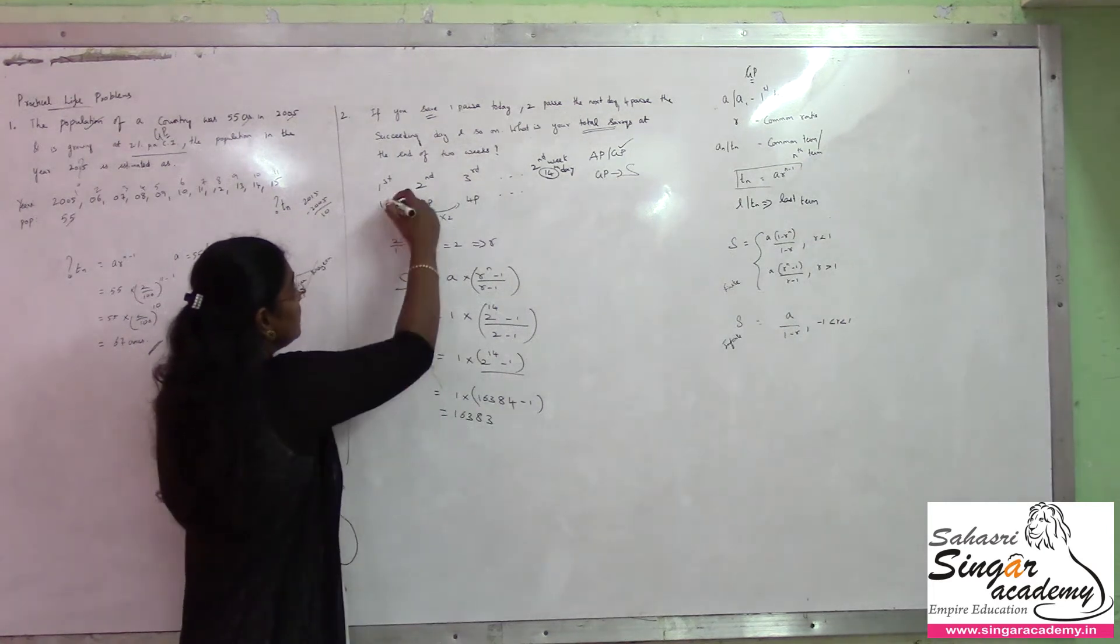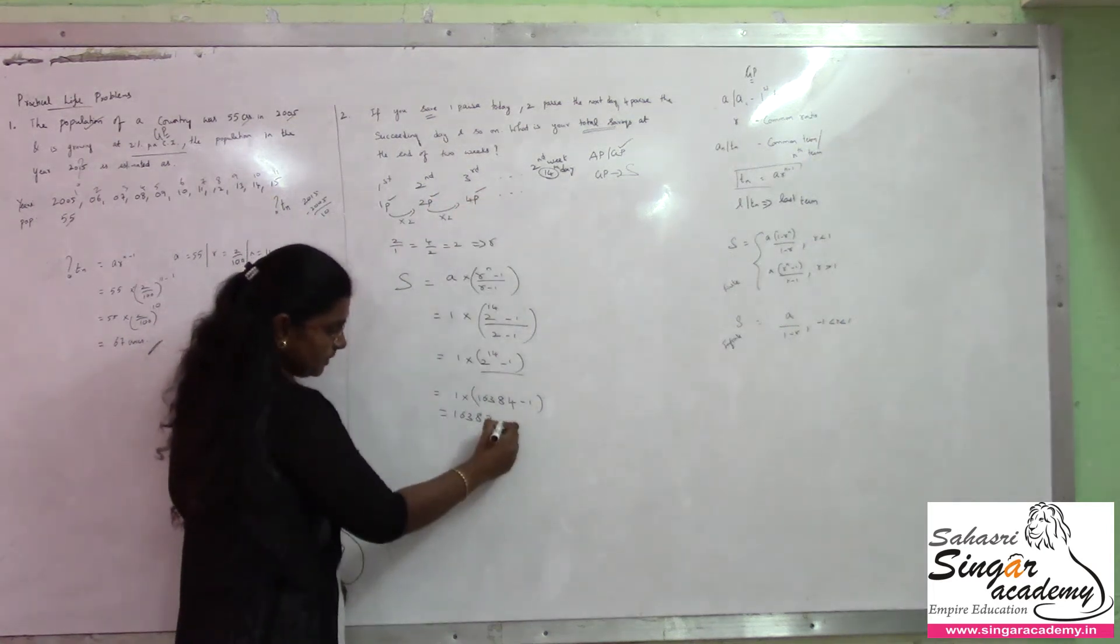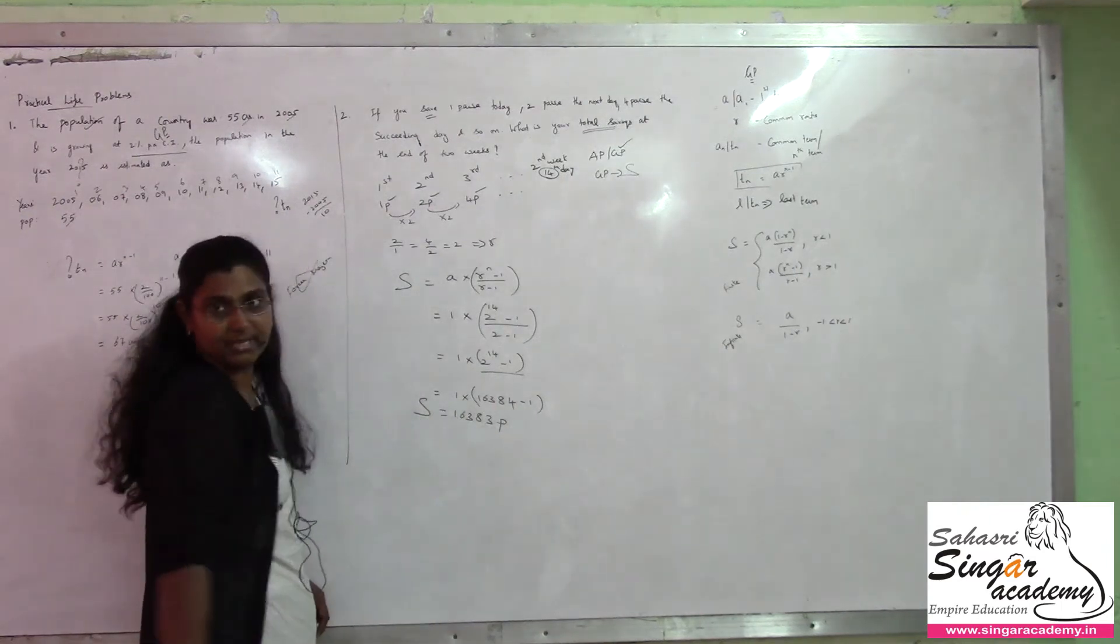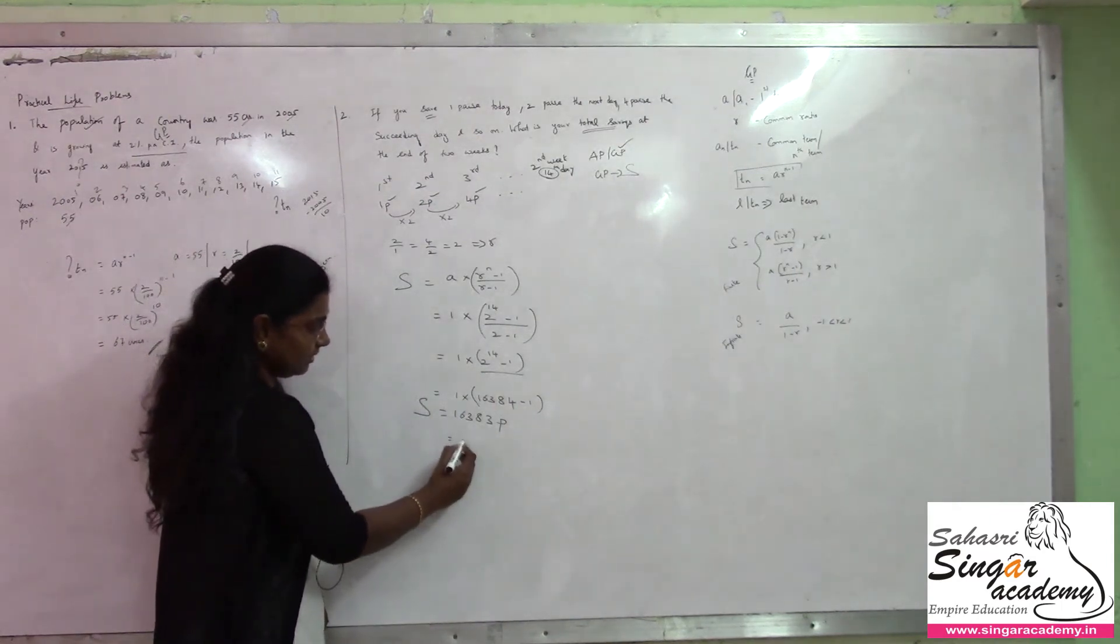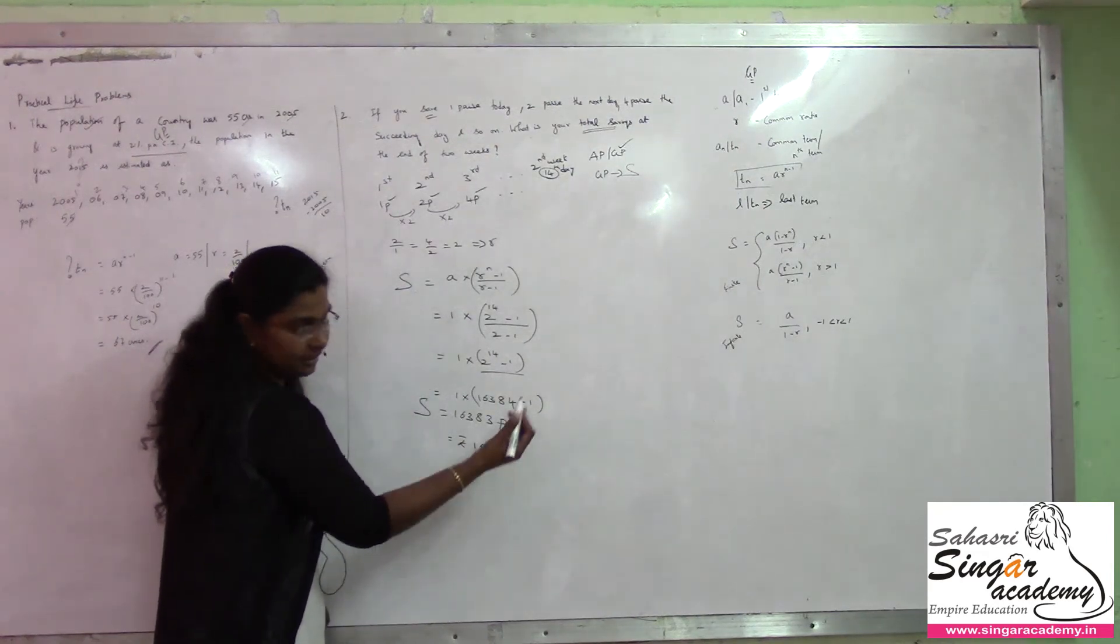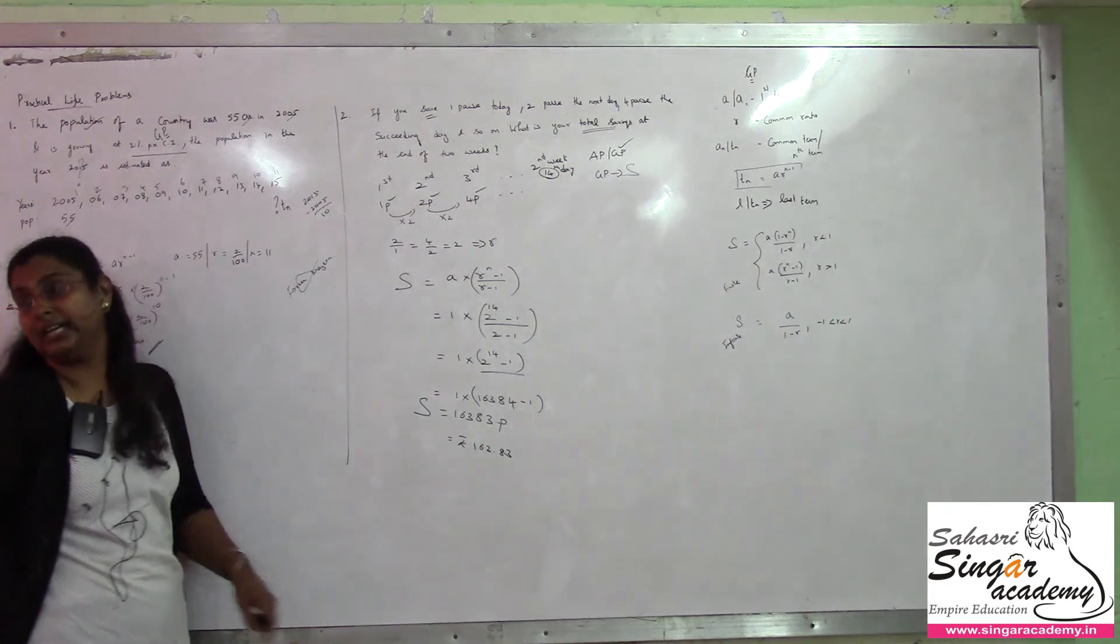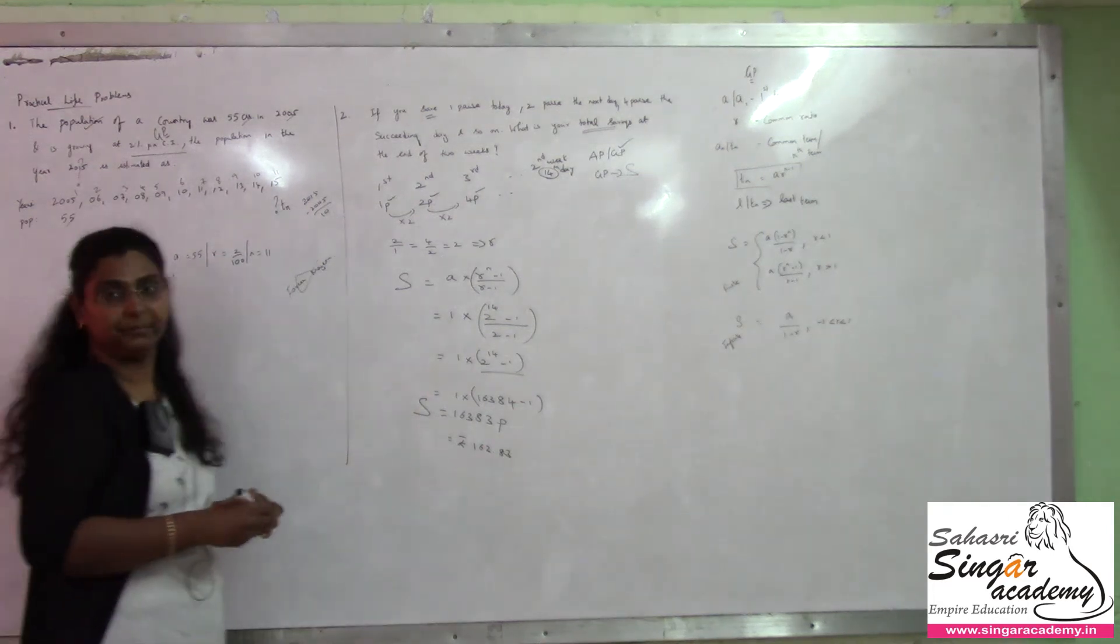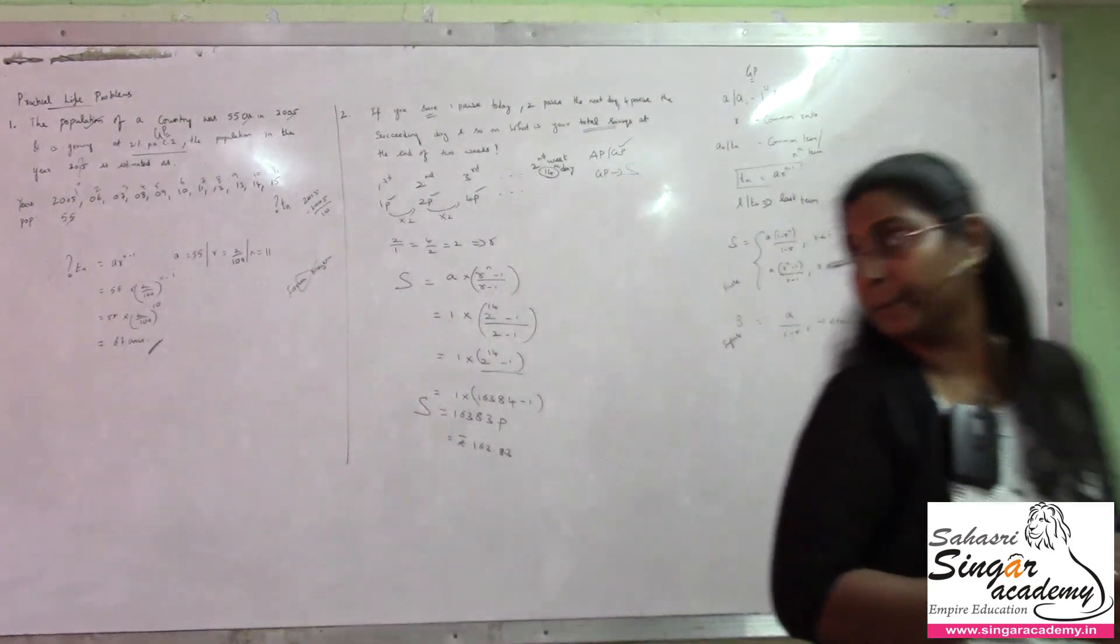And we are using all paises here. So, this is present in terms of paises. So, the whole sum will be in paises. If you present in paises or rupees, well and good. 163.83. 163 rupees and 83 paise. If you present in paises, these are real life problems. Fine. So, if you present in rupees or paise.